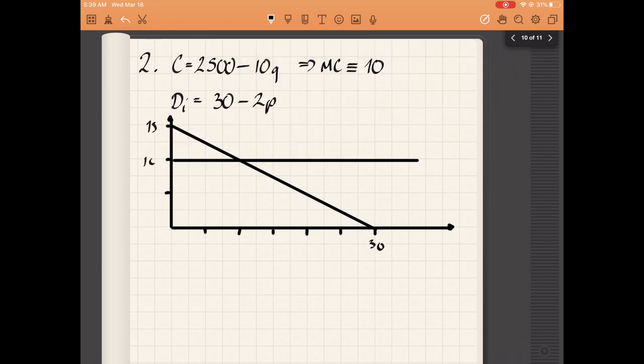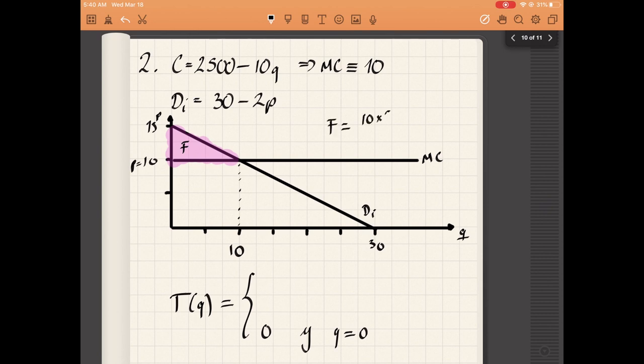In this case, the intersection happens at 10, which means the variable cost is 10 and each consumer buys 10 units. To find the entry fee, we need to find the area between the demand and the price, which is the surplus. That's 5 times 10 divided by 2, which equals 25. So the two-part tariff is an entry fee of 25 plus 10 dollars per unit. That was the answer to part a.